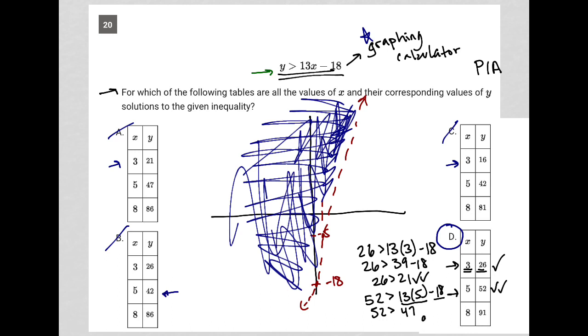And lastly, I'd have 91 is greater than 13 times 8 minus 18. And you'll see that that's also accurate once you do the math there.